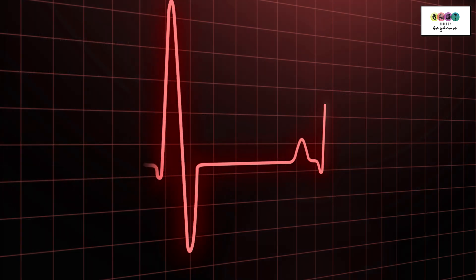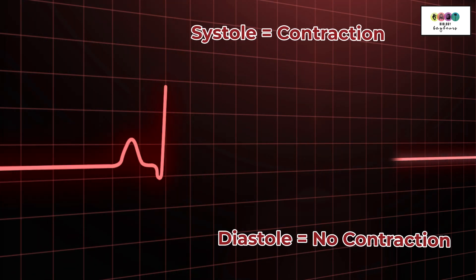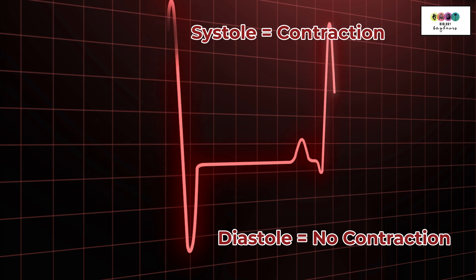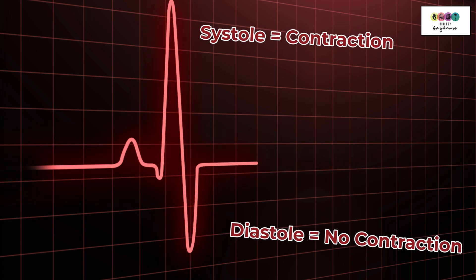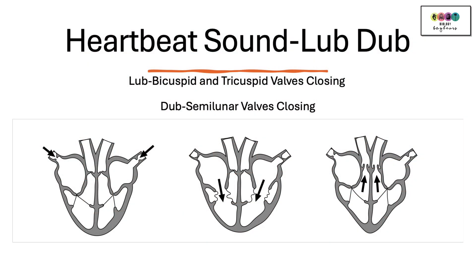The cardiac cycle is made up of stages when there's contraction — systole — and then phases when there is no contraction — diastole. Finally, the heartbeat sound: the lub-dub sound of the heart is caused by valves closing. The lub sound is the bicuspid and tricuspid valves closing. The dub sound is the semilunar valves closing.